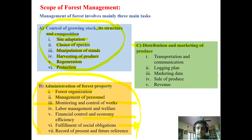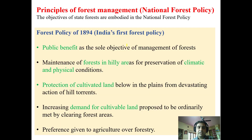Once all these things are done, we have to see the forest produce being generated. We have to transport it through effective means of communication from the point of production to the point where it is sold. We have to see the logging plan in case of timber, the marketing data — what is the present supply and demand scenario in the market, how price and competition is going to work. Once our produce is brought into the market, the revenue generated is to be reinvested into the forest or regulated to maximize benefits.